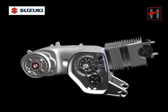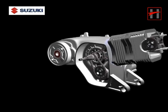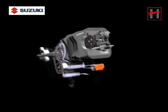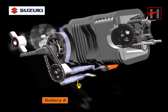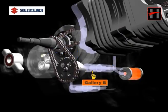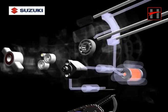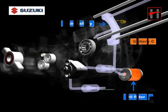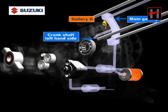The oil flows through five galleries inside the engine. The galleries are gallery A from oil strainer to oil pump, gallery B from oil pump to oil filter, gallery C from oil filter to the main gallery in the crankcase, and gallery D which connects the main gallery of the left hand crankcase to the crankshaft left hand side.